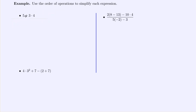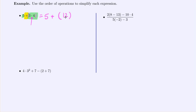For our first example: 5 + 3 × 4. We have addition and multiplication. Per PEMDAS, multiply before adding. So simplify 3 times 4 first: that's 12. Now we have 5 plus 12, which gives us 17.